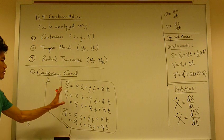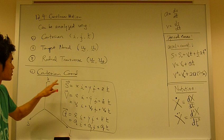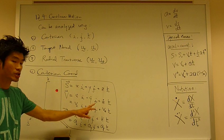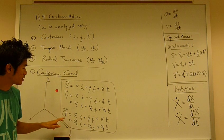So, these are the Cartesian representation of position, velocity, and acceleration.